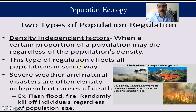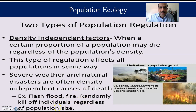This type of regulation affects all populations in some way. Severe weather and natural disasters are often density-independent causes of death. Examples include flash flood and fire, which randomly kill individuals regardless of population size.